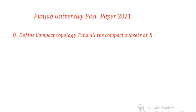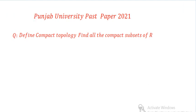In the topological space, today we have a question from the 2021 past paper. The question is: define the compact topology and find all the compact subsets of R. So, what is a compact topological space?